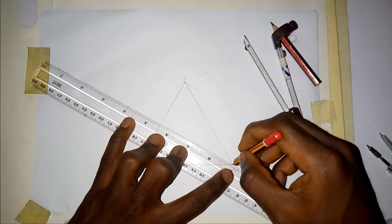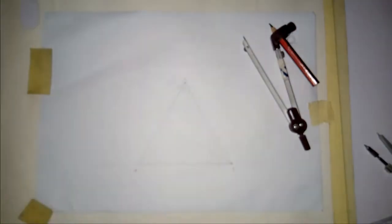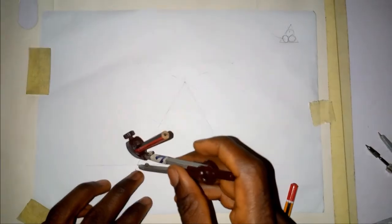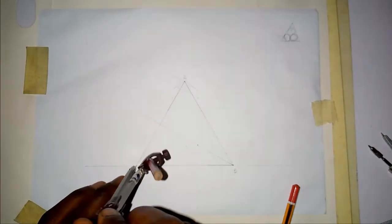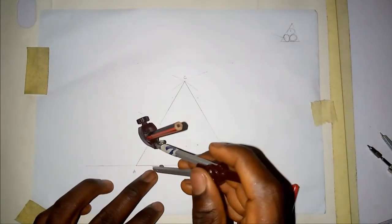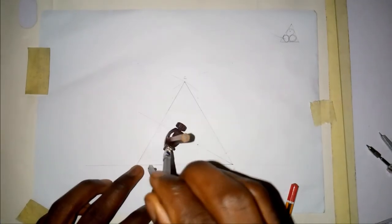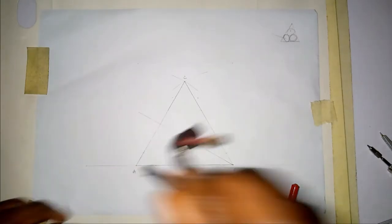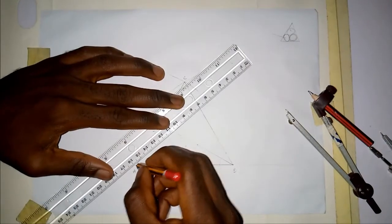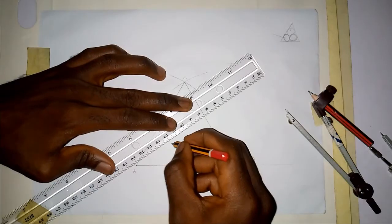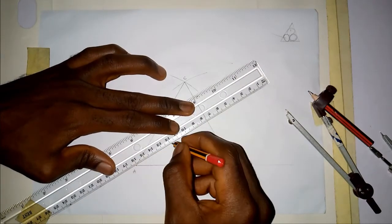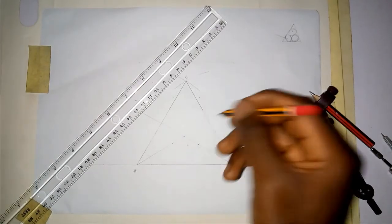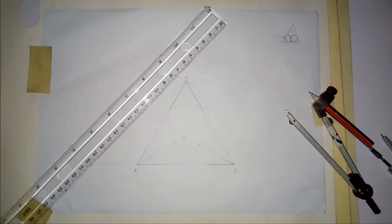I'll draw a line from point B. What I've just done to point B, I'll repeat the same process to point A. At any convenient length, increase the compass. This is the bisection of angles — I've done a video on how to bisect an angle, you'll find it on the playlist for technical drawing. From point A to where the arcs intercept, draw a straight line. Where these two lines meet, I'm going to call this point O — that represents the center of this equilateral triangle.